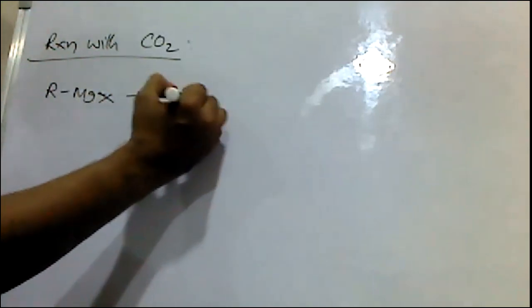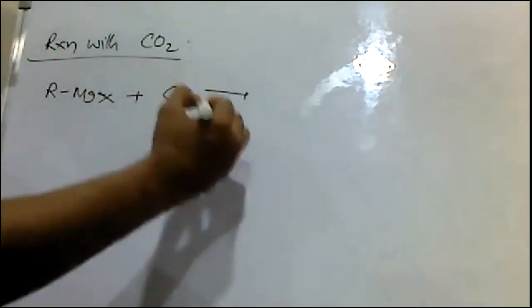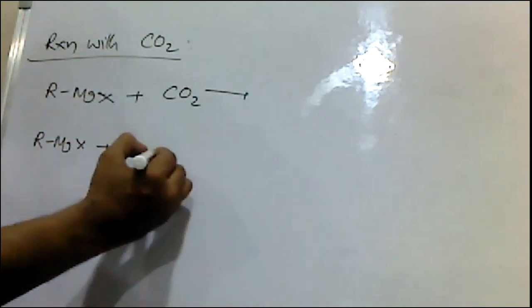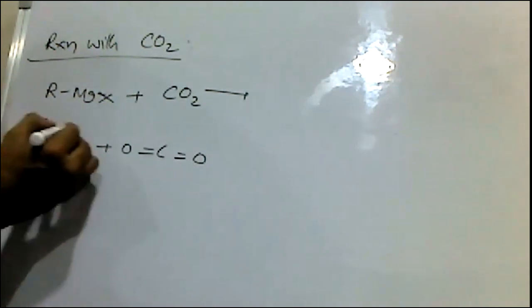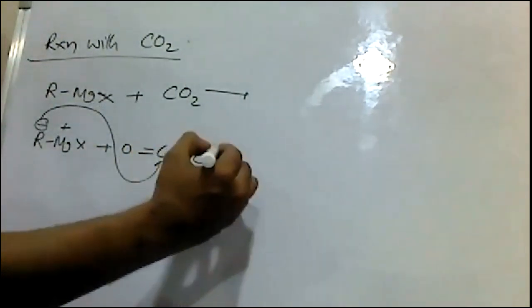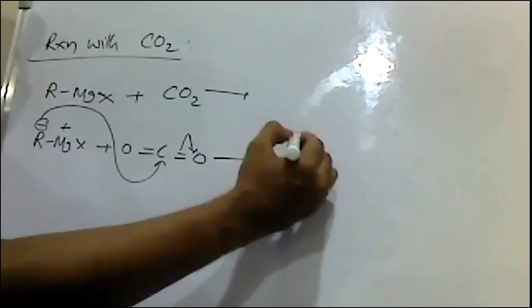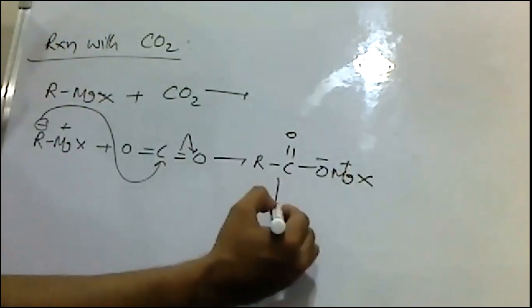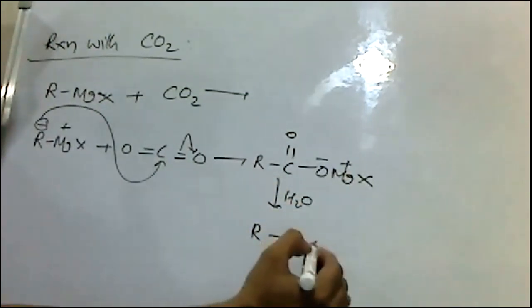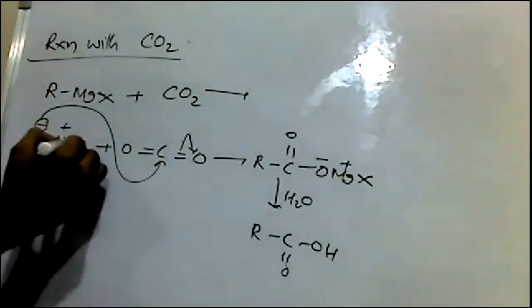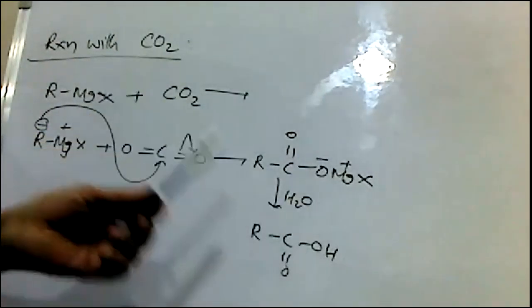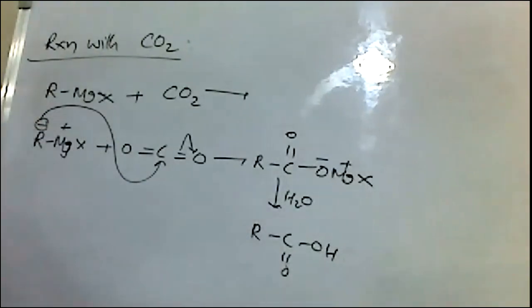Another important reaction of Grignard Reagent is reaction with carbon dioxide. When RMgX reacts with CO₂, the negatively charged carbon of RMgX attacks the carbon dioxide. Initially an intermediate RCOOMgX is formed, which on hydrolysis gives a carboxylic acid (RCOOH). So, when Grignard Reagent is treated with carbon dioxide followed by hydrolysis, carboxylic acids are obtained.